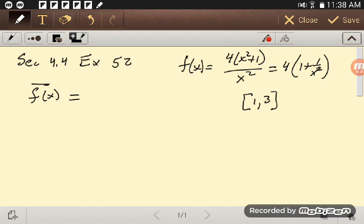So I know the average value of f on 1, 3 is the definite integral from 1 to 3 of f of x dx and then all divided by the width of that interval so 3 minus 1.